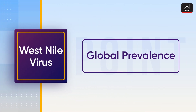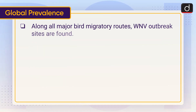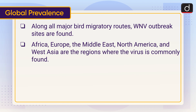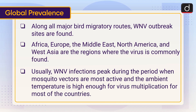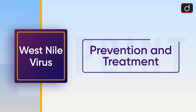Moving on to its global prevalence: along all major bird migratory routes, WNV outbreak sites are found. Africa, Europe, the Middle East, North America, and West Asia are the regions where the virus is commonly found. Usually, WNV infections peak during the period when mosquito vectors are most active and the ambient temperature is high enough for virus multiplication.